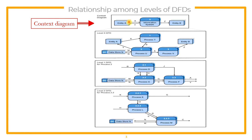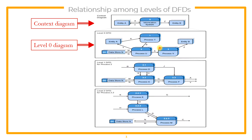Context Diagram is the first diagram to be created when creating Dataflow Diagrams. When this diagram is exploded, it will be named as Level 0 or Diagram 0. Since it's only an explosion of the Context Diagram, the number of flows from or to each entity should be equivalent. In our Level 0 or Diagram 0, it should be the same.